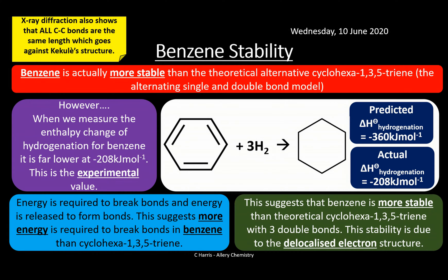X-ray diffraction is another method that proves all the carbon-carbon bonds in benzene are the same length, which completely contradicts Kekulé's structure, which proposed distinct single and double bonds. X-ray diffraction is a powerful technique for examining atomic structure and confirms all bond lengths are equal. You need to be able to explain this to examiners — both bond enthalpy comparisons and X-ray diffraction evidence support the unique stability of benzene.